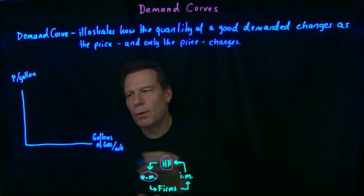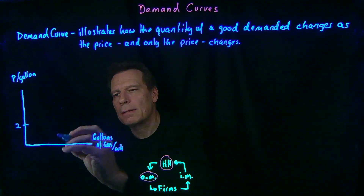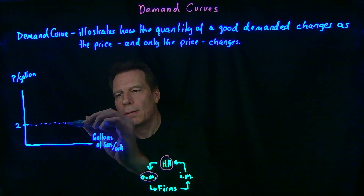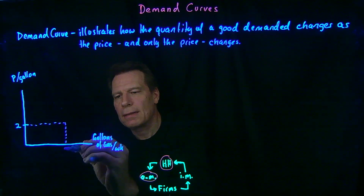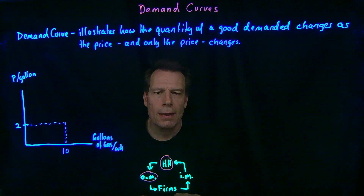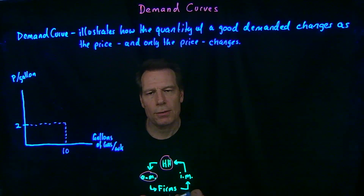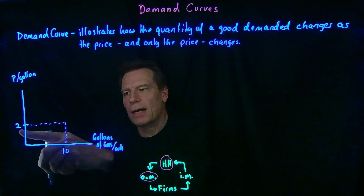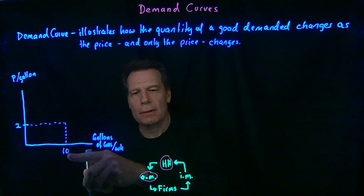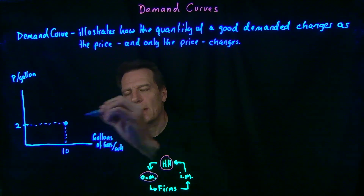Suppose that we observe that currently the price of gasoline is $2 per gallon, and at that price you're choosing to buy 10 gallons of gasoline per week. We've just identified one point on your demand curve. At the price of $2 per gallon, you're demanding 10 gallons of gasoline per week.